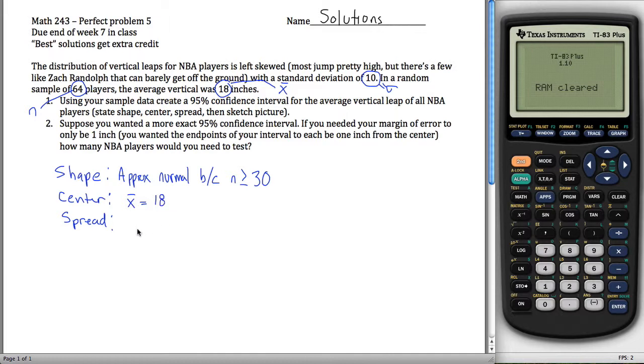And then the spread we want will be the standard deviation of our sampling distribution, which in this case is sigma divided by the square root of n, sigma over root n. And sigma in this problem is given as 10, and n is 81. So what we get is 10 ninths here.